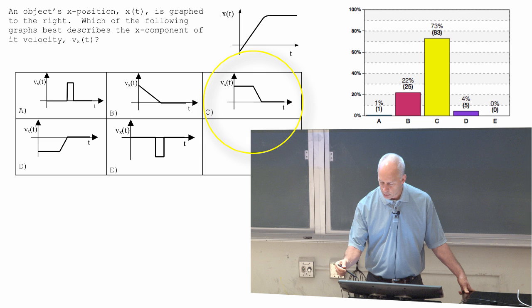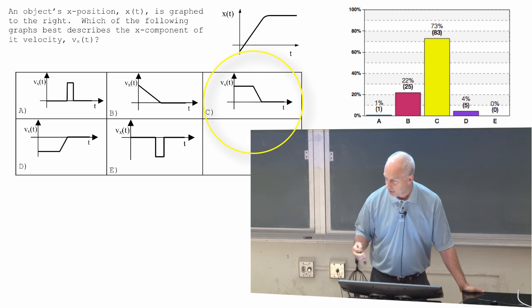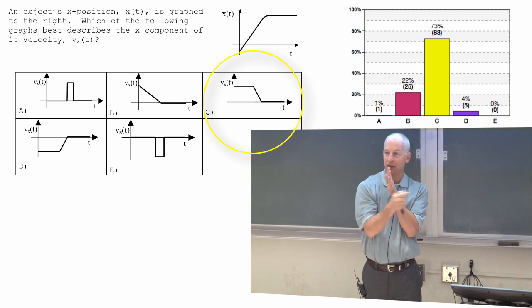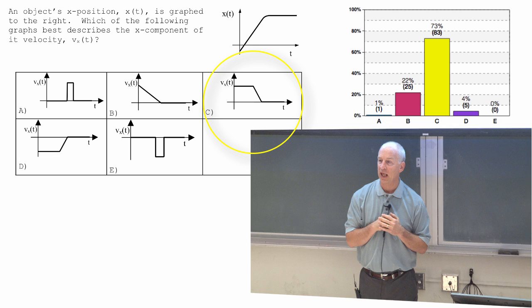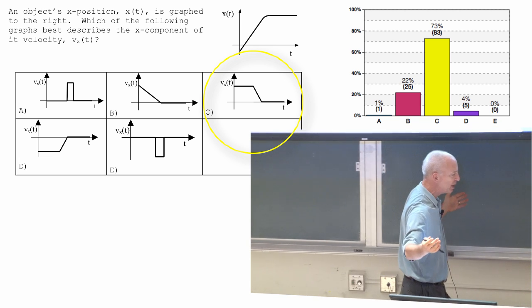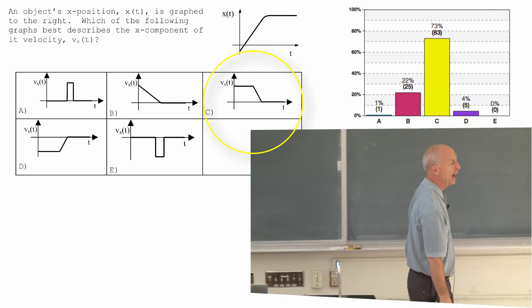And then, the slope of x of t changes. If x is a coordinate that's to the right, then what the initial part of that shows is, say it's my coordinate to the right, the initial part of that shows me getting a larger and larger x value.